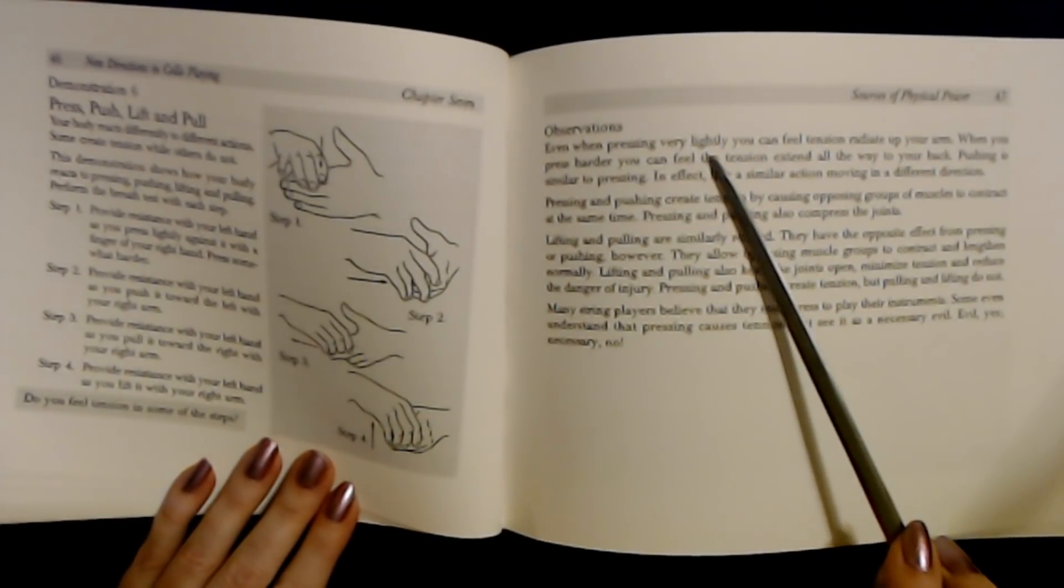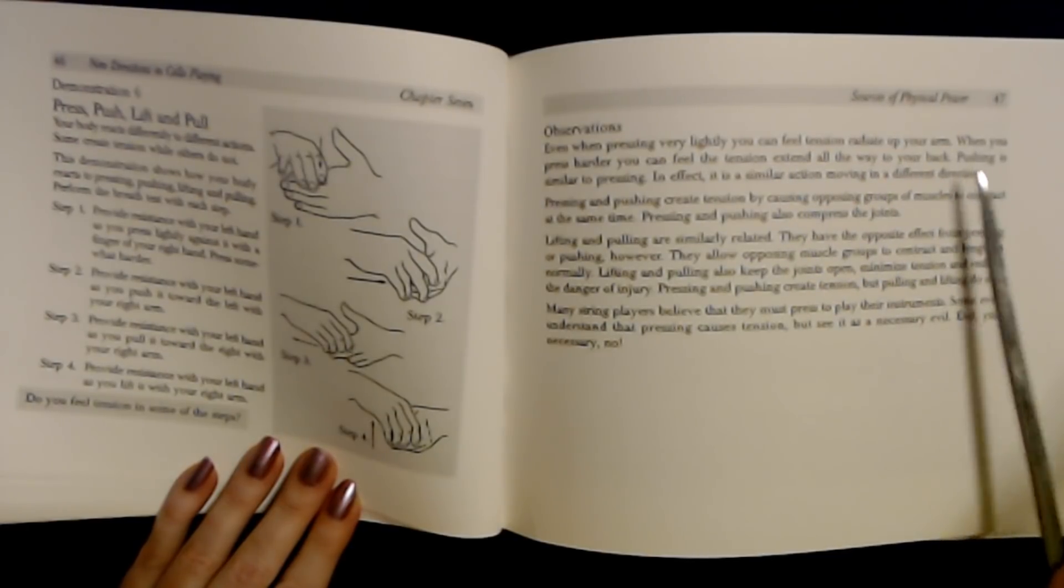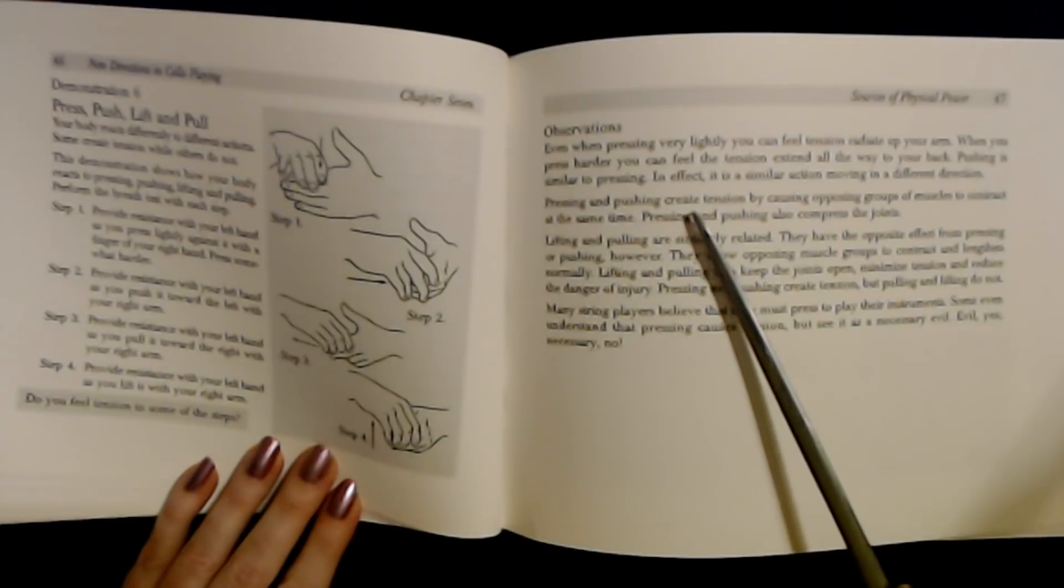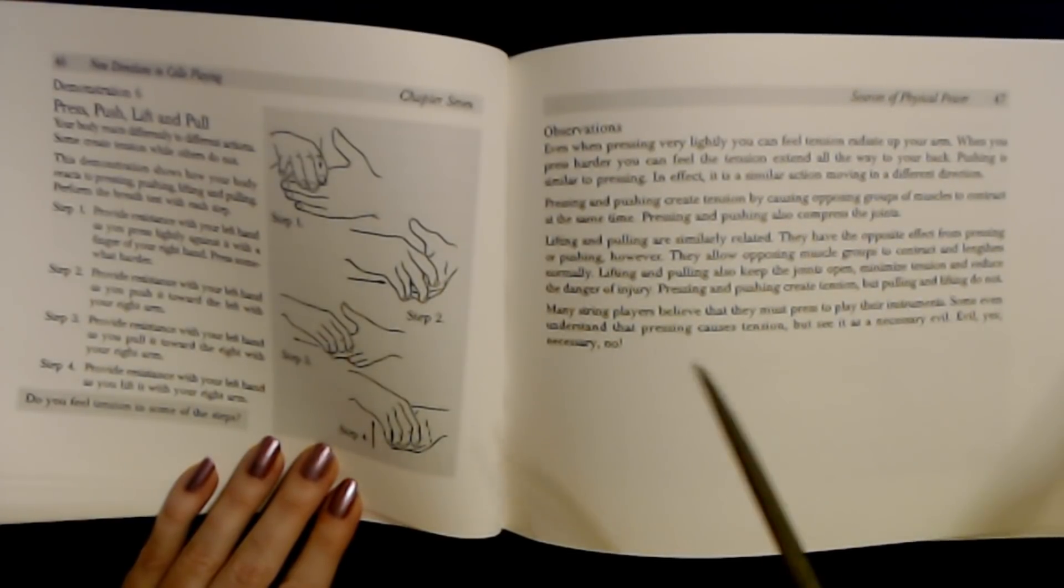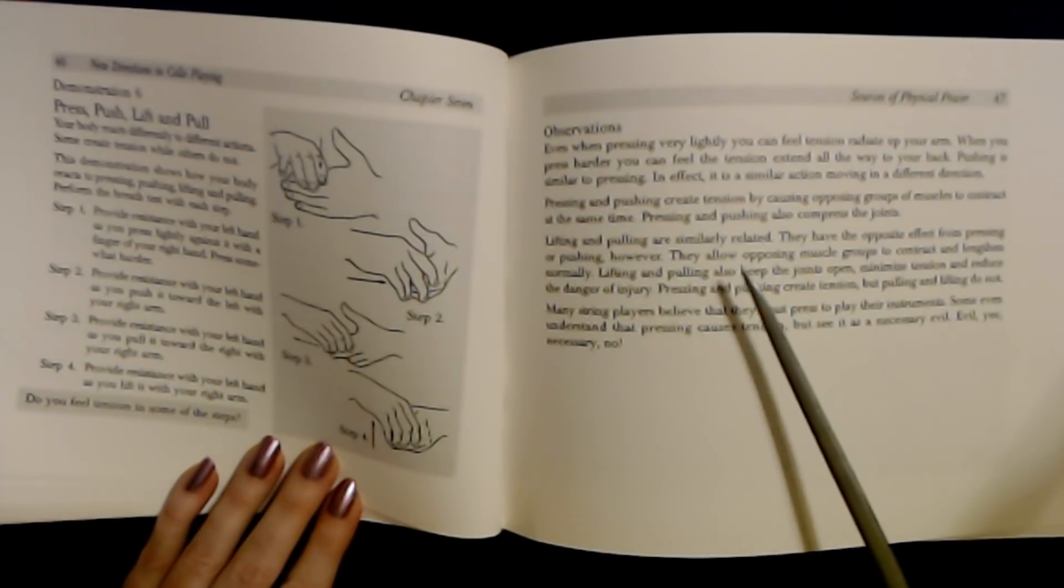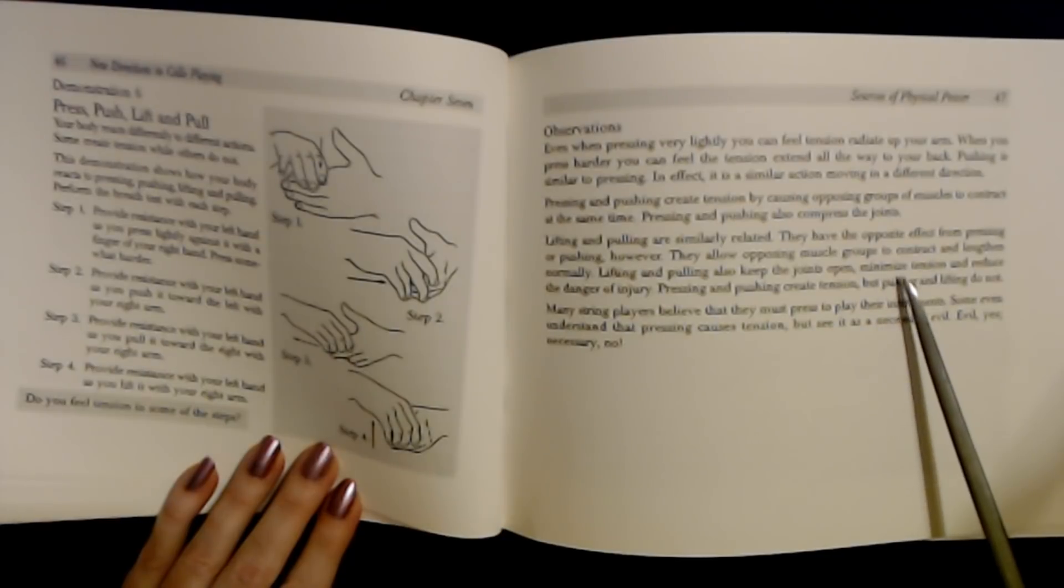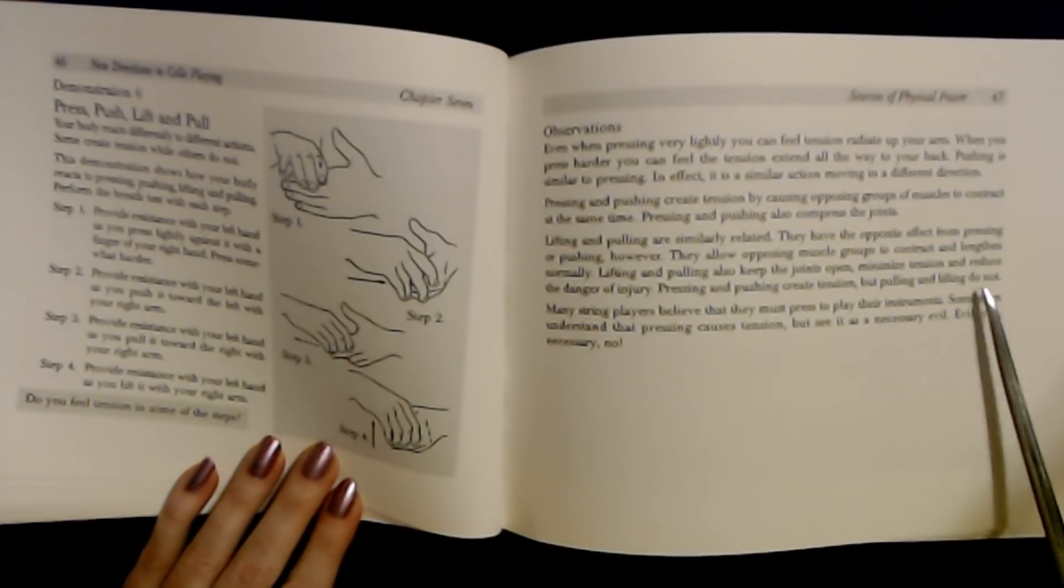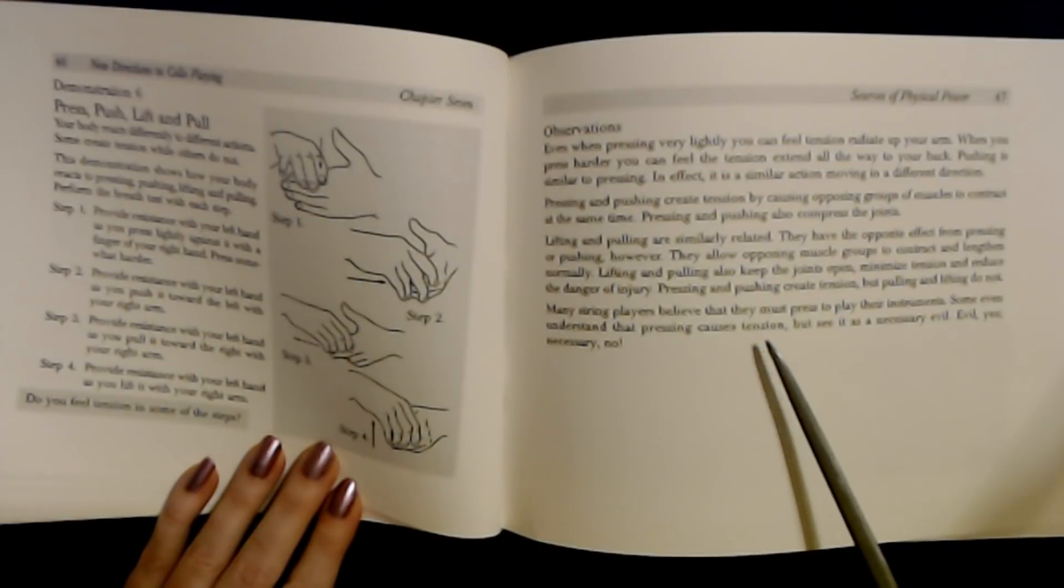Observations. Even pressing very lightly, you can feel tension radiating up your arm. When you press harder, you can feel the tension extend all the way to your back. Pushing is similar to pressing, in fact, a similar action moving in a different direction. Pressing and pushing create tension by causing opposing groups of muscles to contract at the same time. Pressing and pushing also compress joints. Lifting and pulling are similarly related. They have the opposite effect of pressing or pushing, however. They allow opposing muscle groups to contract and lengthen normally. Lifting and pulling also keep the joints open, minimize tension, and reduce the danger of injury.